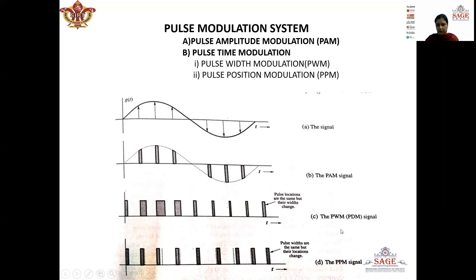In Pulse Position Modulation (PPM), the position of the pulses changes but the width and amplitude remain constant. When the amplitude of the message signal is zero the pulse is at its reference position, but as the amplitude increases the position of the pulses shifts to the left side of the reference position. When the message signal moves towards the negative side, the pulse position shifts to the right. So in PPM, only the position of the pulse changes according to the message signal, with no change in width or amplitude.